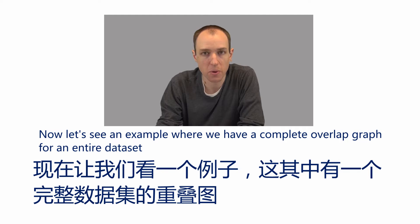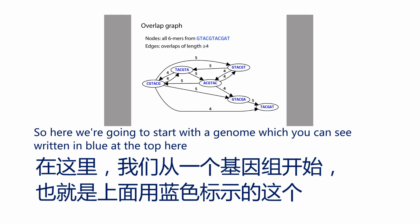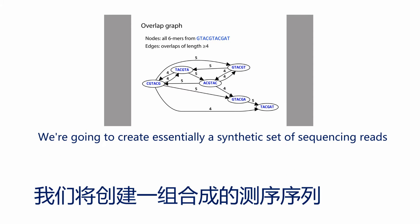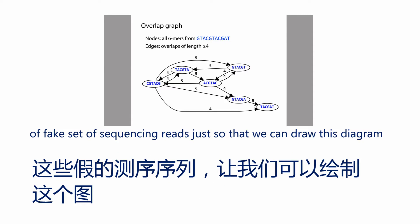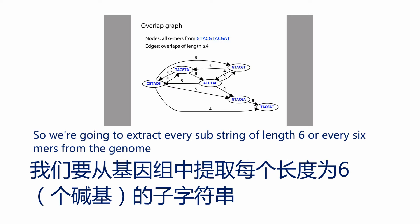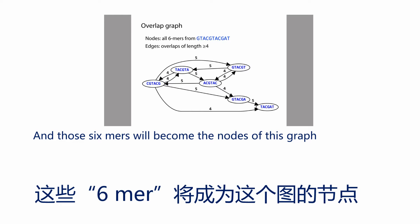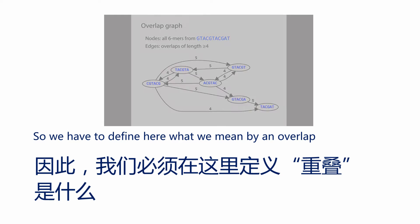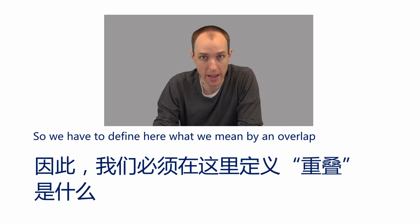Now let's see an example with a complete overlap graph for an entire dataset. We start with a genome written in blue at the top, and we extract every substring of length six — essentially creating a synthetic set of sequencing reads. These six-mers become the nodes of the graph, and we draw a directed edge for every pair of nodes that have an overlap. We need to define what we mean by an overlap.